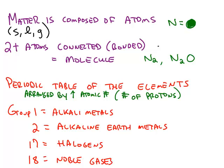If you connect two or more atoms together, meaning they're chemically bonded together, then you have a molecule, which could be two of the same elements, like N2. This would be the molecular form of nitrogen compared to one atom of nitrogen, the atomic form or monatomic nitrogen. Or you could have a molecule composed of two or more atoms where they don't have to be the same element, such as two nitrogens and one oxygen connected into one molecule.